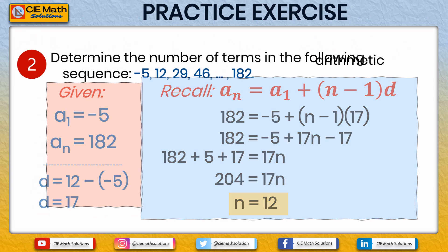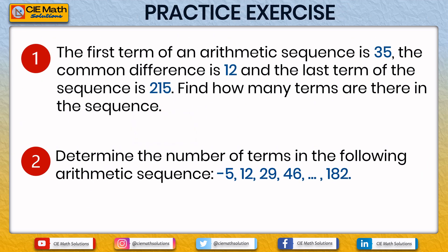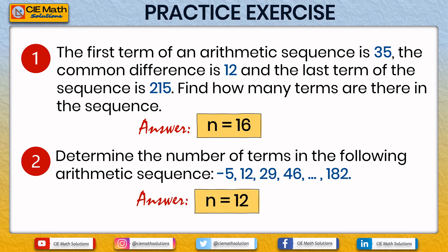Summarizing the answers: the number of terms in the first item is 16, and the number of terms in the second item is 12. If you got the answers correct, congratulations! You now know how to find the number of terms of an arithmetic sequence given the first term, last term, and common difference. If you did not get all the answers correct, don't worry — you can still practice for more. You may also answer the following homework.